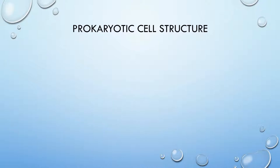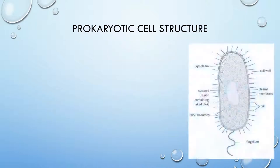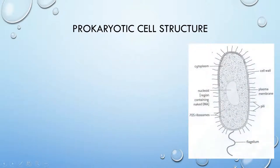Prokaryotic cell structure. Prokaryotic cells are divided into two groups, archaea and eubacteria. That is a prokaryote.